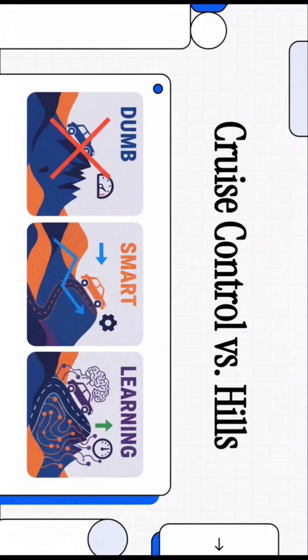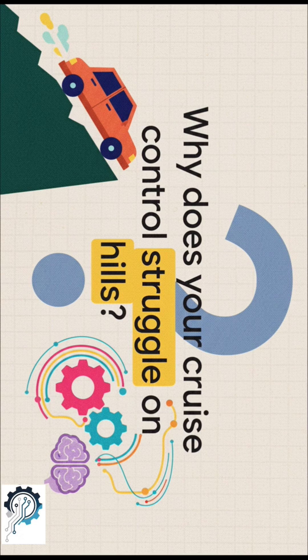Let's talk about advanced control systems, but we'll use an example you know really well. You've totally been there, right? Cruise control's on, you hit a hill, and the car just slows down.